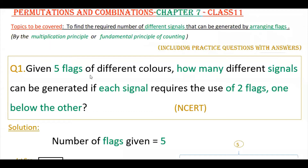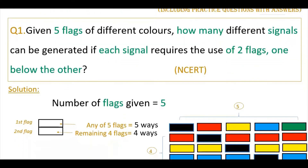Five different flags are given. Out of these five flags, we have to use only two flags for each signal. Those flags have to be arranged one below the other. We need to find how many different signals can be generated.